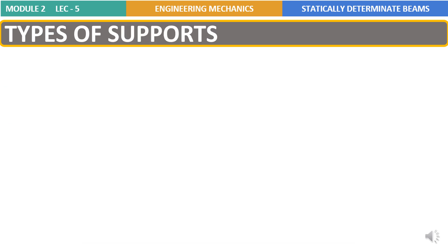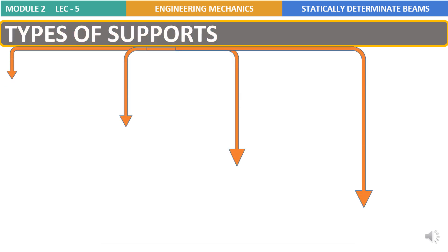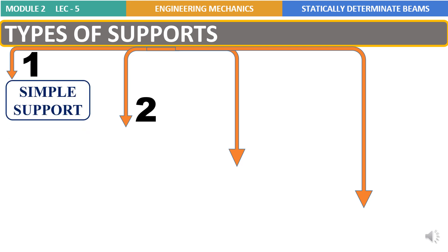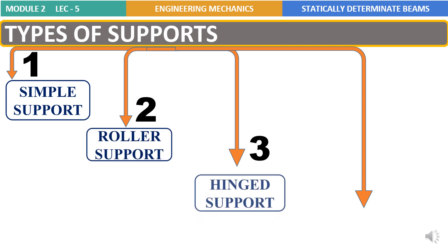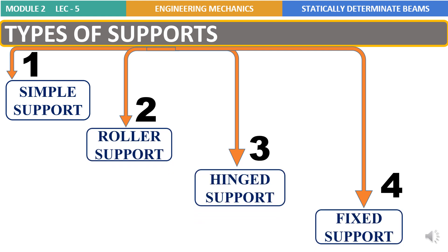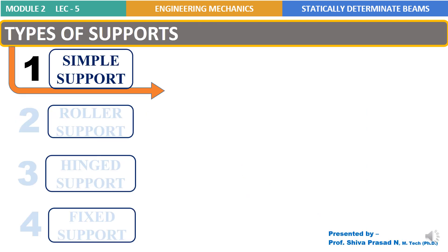Types of supports. Supports are classified into four types: first, simple support; second, roller support; third, hinged support; and fourth, fixed support. Now let's take up each type of support in detail.